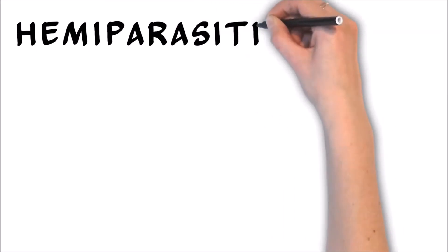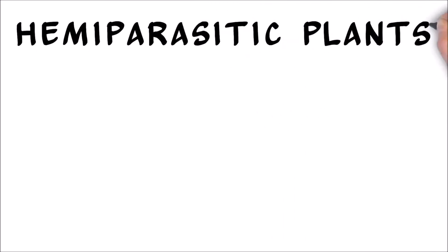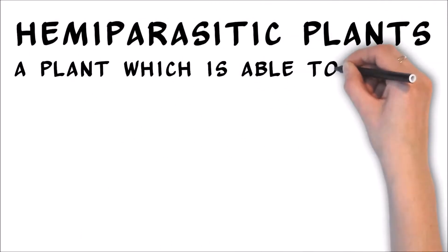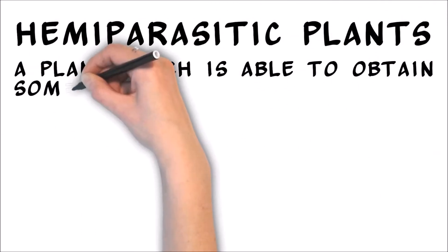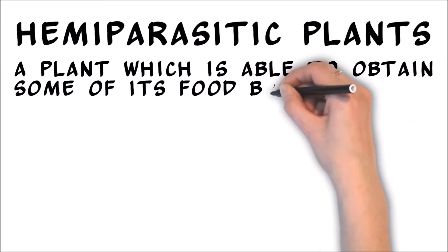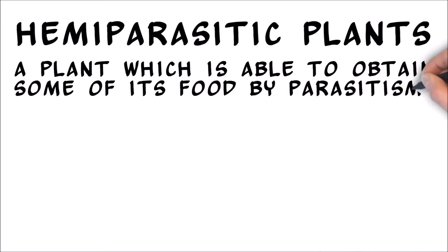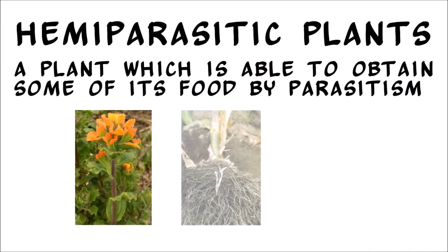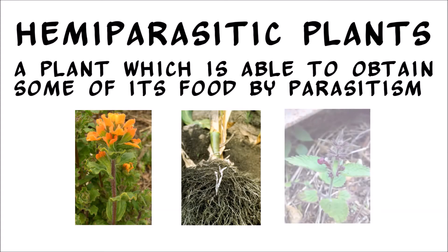These plants are hemiparasitic, and maintain many of the same structures and characteristics as autotrophic plants, including leaves, roots, and a green color indicating the presence of chlorophyll.